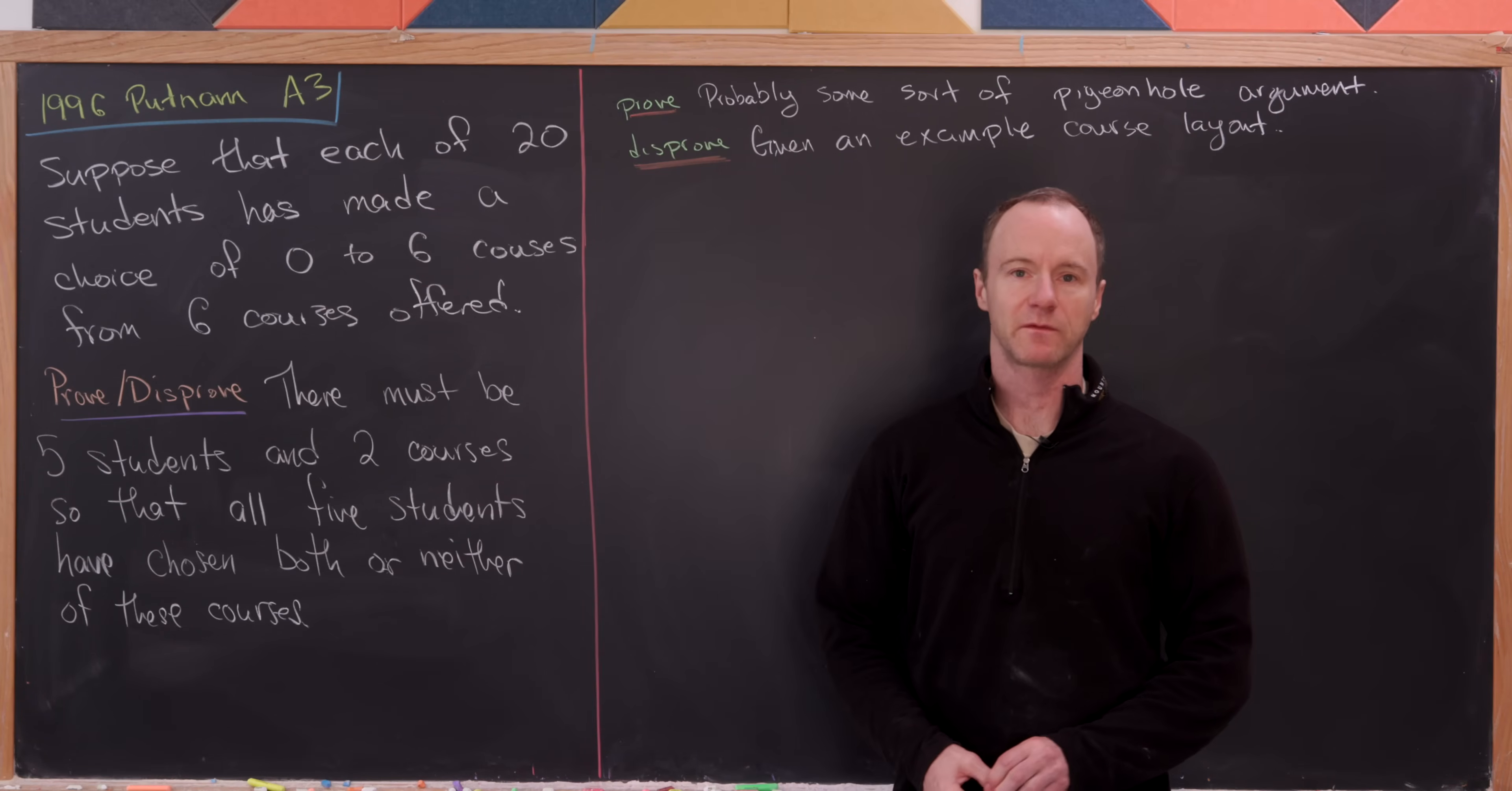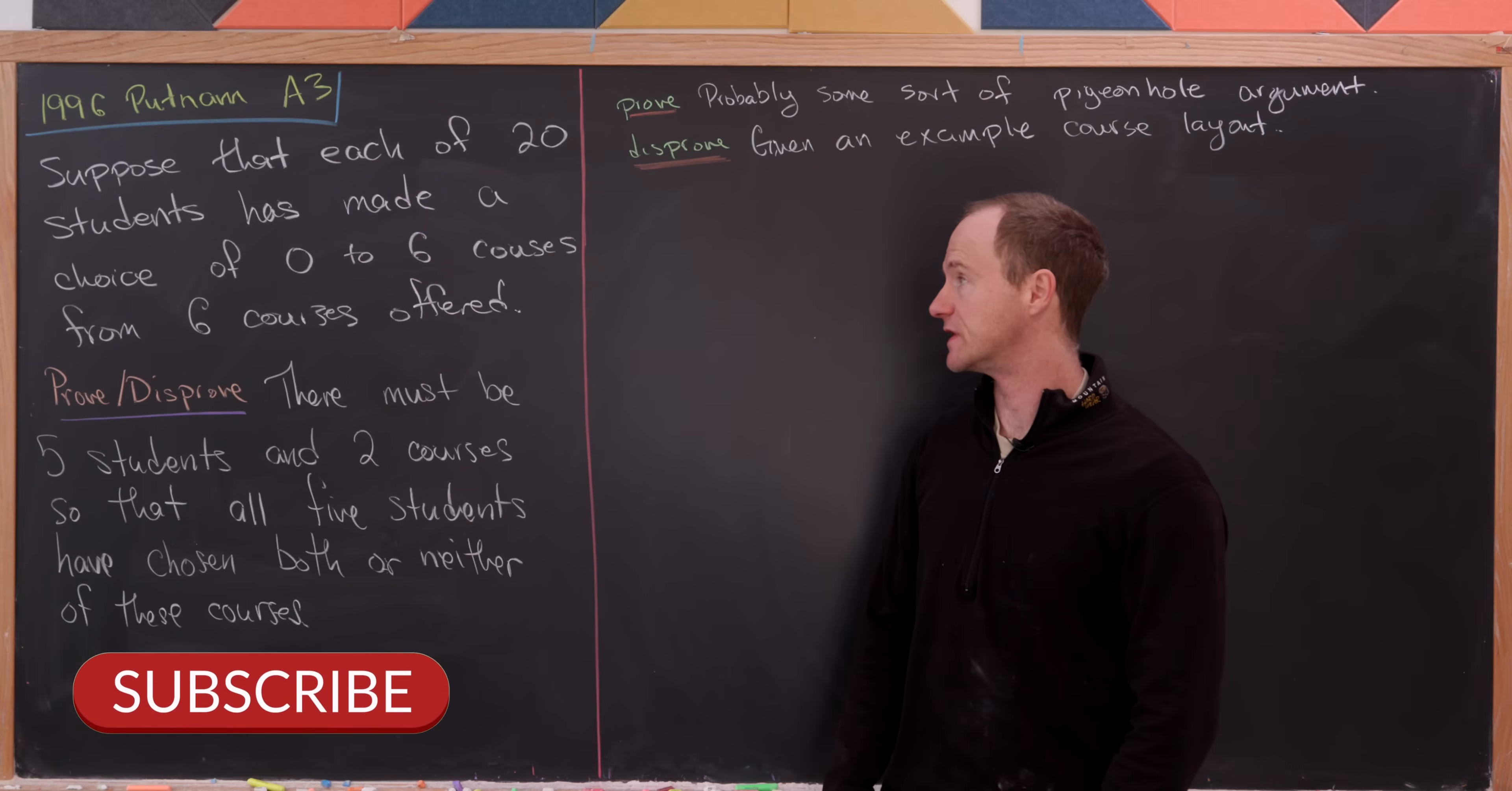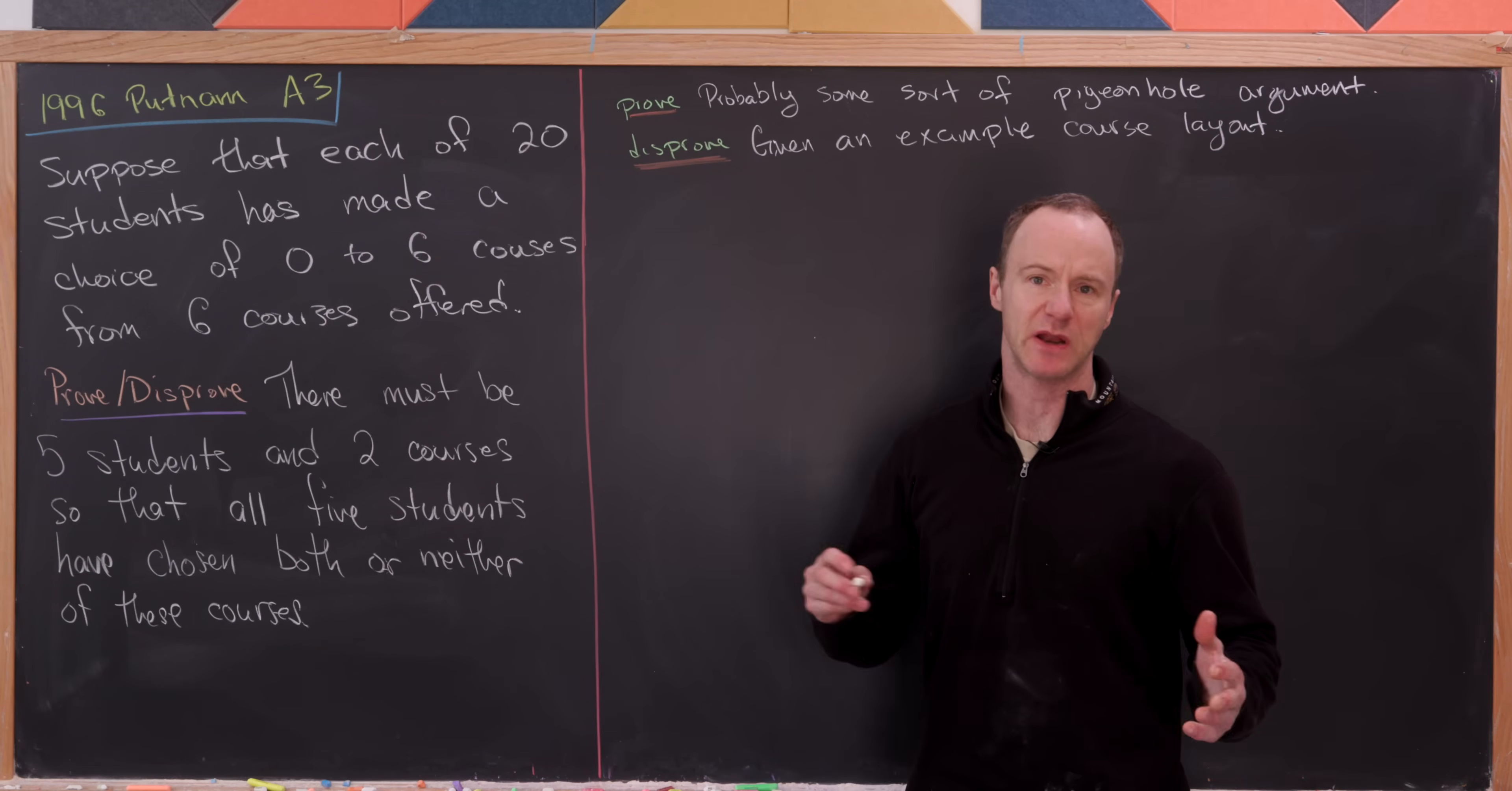Let's look at this nice combinatorics problem from the 1996 Putnam exam. So let's suppose that each of 20 students has made a choice of zero to six courses from six courses that have been offered.